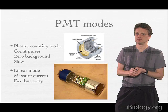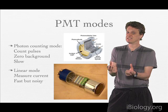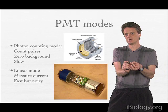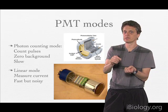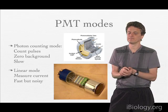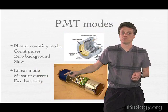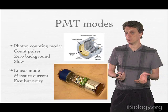A nice example of the photon counting mode is what you see in Geiger counters. Geiger counters are basically a PMT with a scintillation material in front of it, so that radioactive material is changed into a photon. That photon hits the photocathode and with every hit you get a count, which you can hear in your Geiger counter. The other mode is the linear mode, where we measure the current, which is a much faster mode of operation but also has more noise.